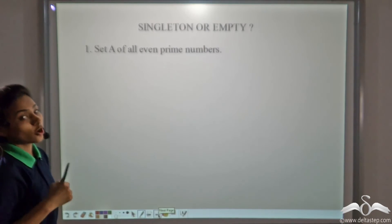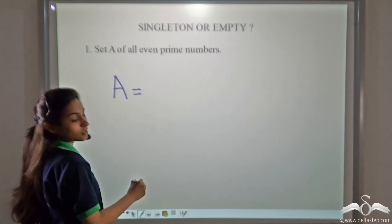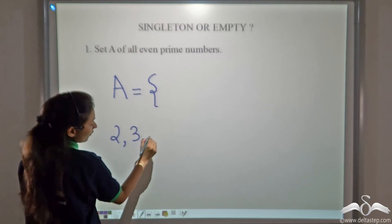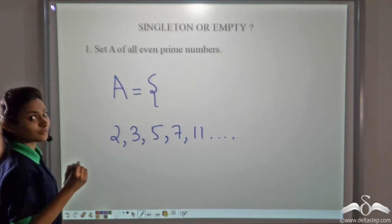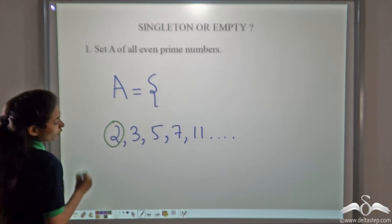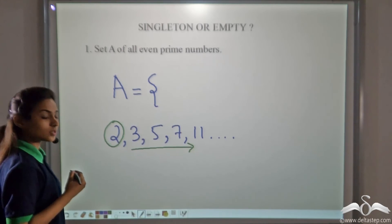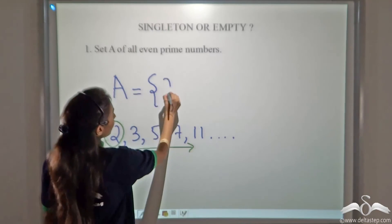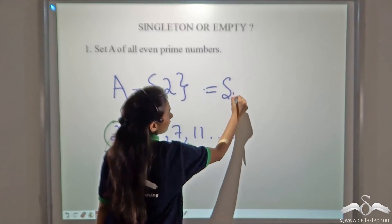Now you answer: set A of all even prime numbers — is it a singleton or empty set? The prime numbers are 2, 3, 5, 7, 11, and so on. How many are even? Only 2 is even, because any other even number would be divisible by 2 and thus not prime. So 2 is the only even prime number. Therefore A equals {2}, which contains only one element — so this is a singleton set.